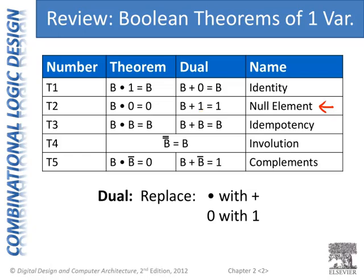Idempotency: if we have a variable in an AND relationship with itself, that evaluates to just whatever that variable was — so B AND B is B. The power of the single variable is the same whether we AND it with itself or not. Similarly, if we have a variable in an OR relationship with itself, we get that variable back.